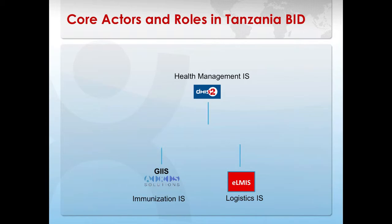which has logistics and stock information related to the cold chain for the immunizations. All of these systems share data, and part of the problem we are trying to solve is how to effectively exchange data between these systems — so that we can pull the immunization data on a monthly basis and put it into the HMIS, cross-reference the stock system ELMIS against GIIS. We also have a facility registry, which has a list of all health facilities providing service delivery data, and this should be cross-referenced with both the HMIS and the GIIS to ensure accurate reporting.